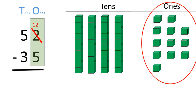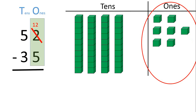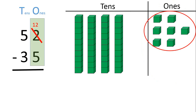We must subtract 5 from 12. So let's take away 5 ones blocks from the 12 ones blocks: 1, 2, 3, 4, 5. How many are we left with? We are left with 7. 12 minus 5 equals 7. So write down 7 in the ones place.